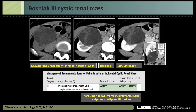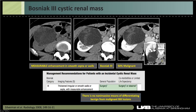Another Bosniak 3 example: the cystic nature is confirmed first, then thin septations that appear to volume-average on coronal view can still show measurable enhancement — for instance, from 22 to 52 Hounsfield units. That enhancement classifies it as Bosniak 3. Careful evaluation on coronal and axial views is needed to assess septation thickness and enhancement.